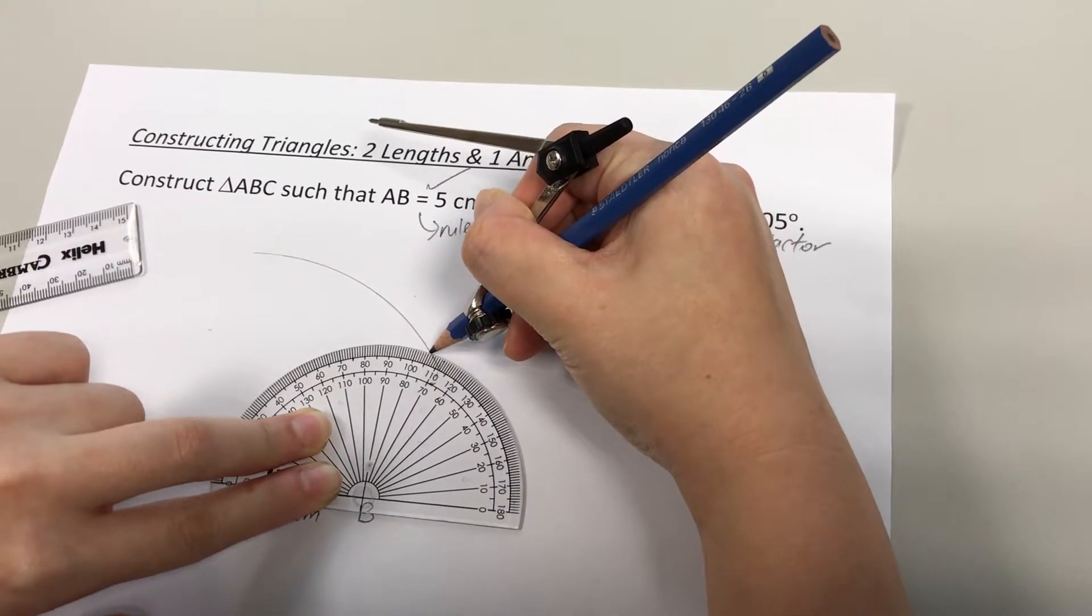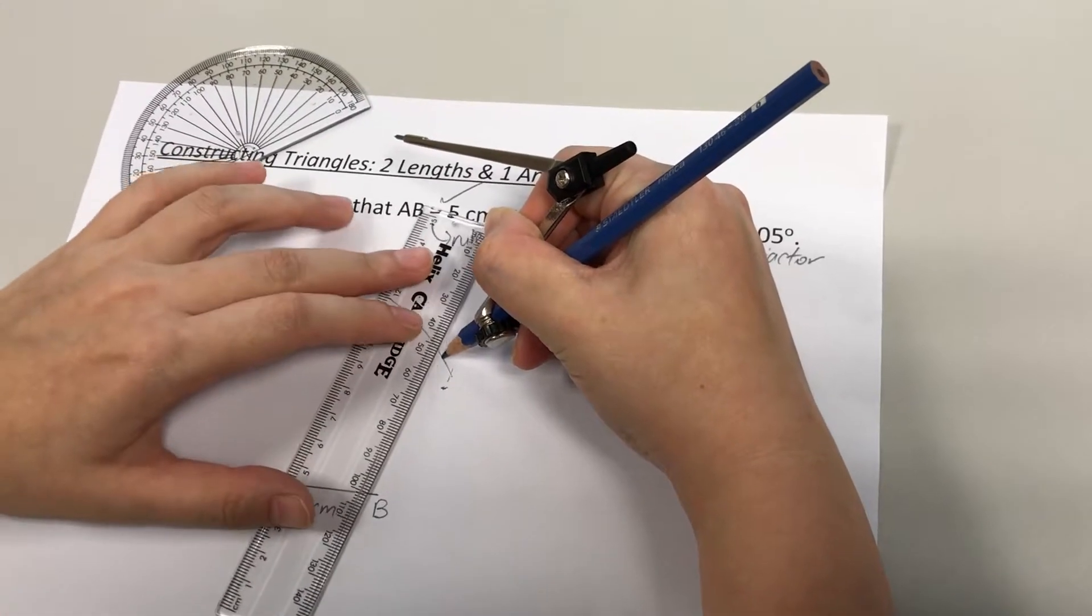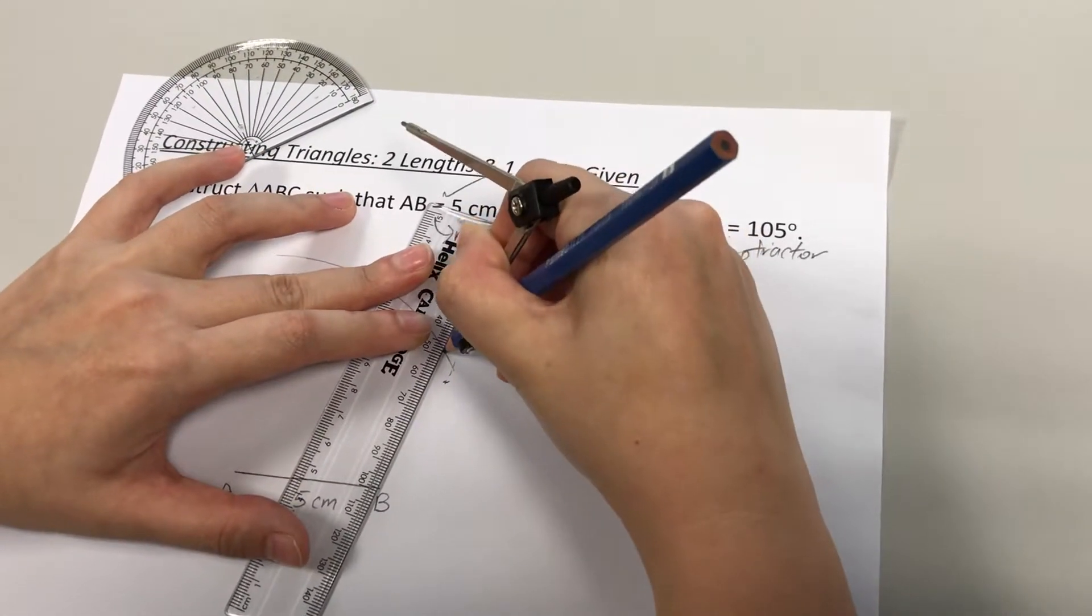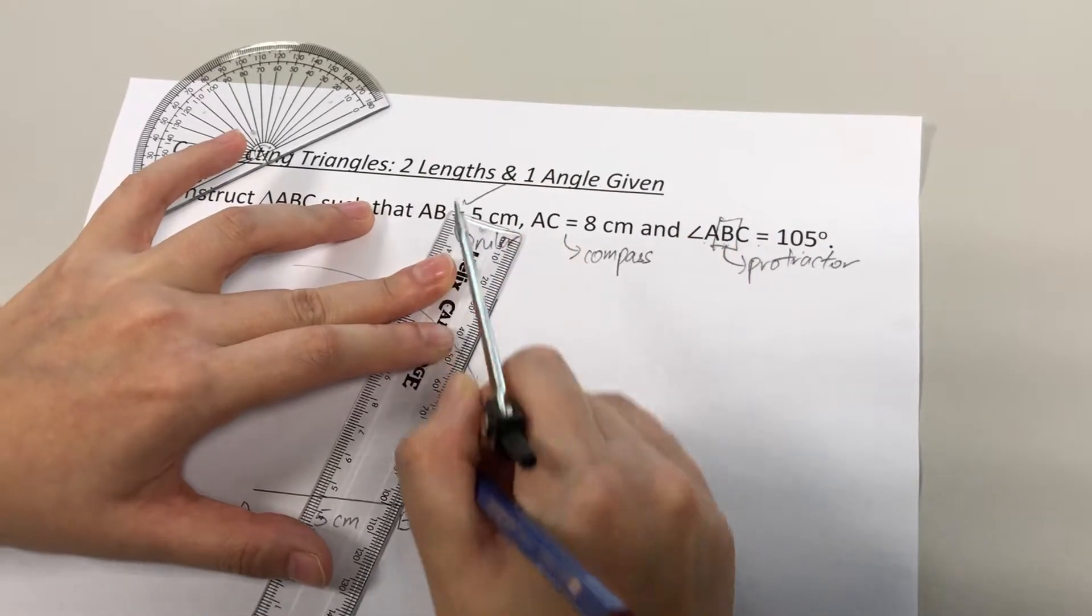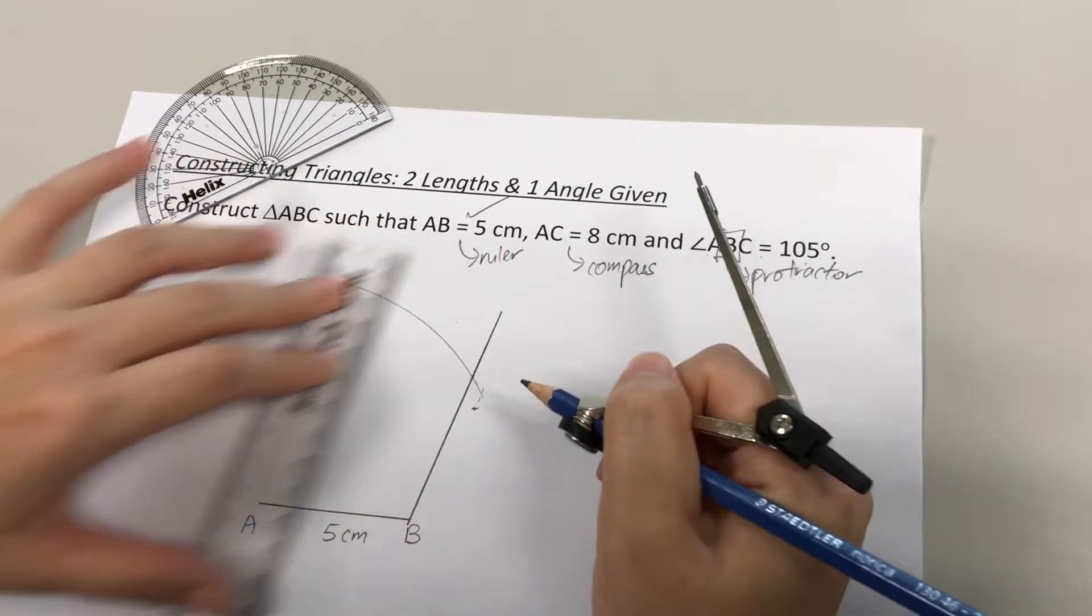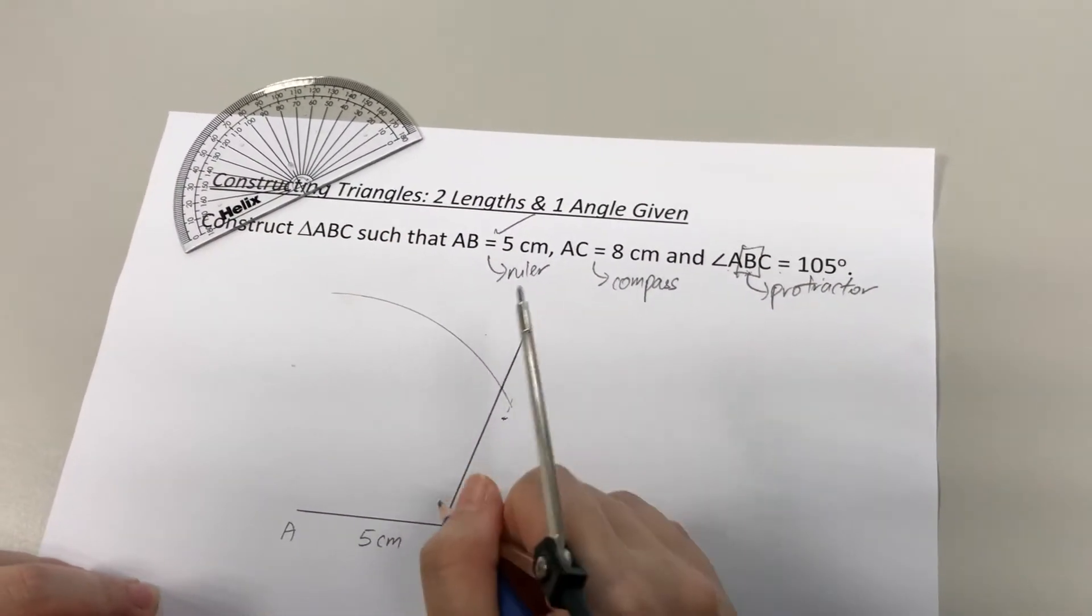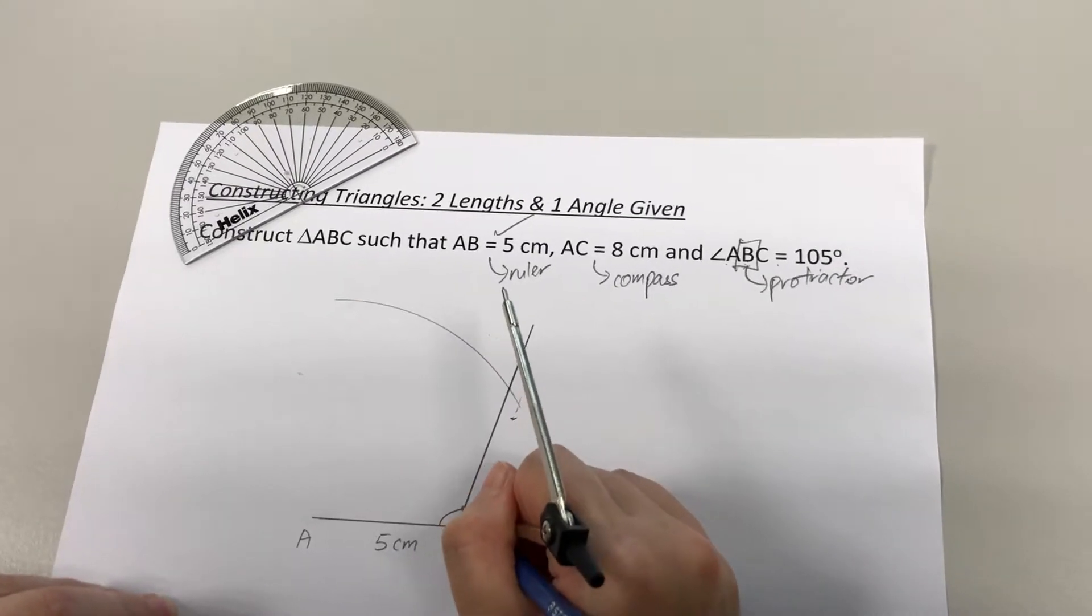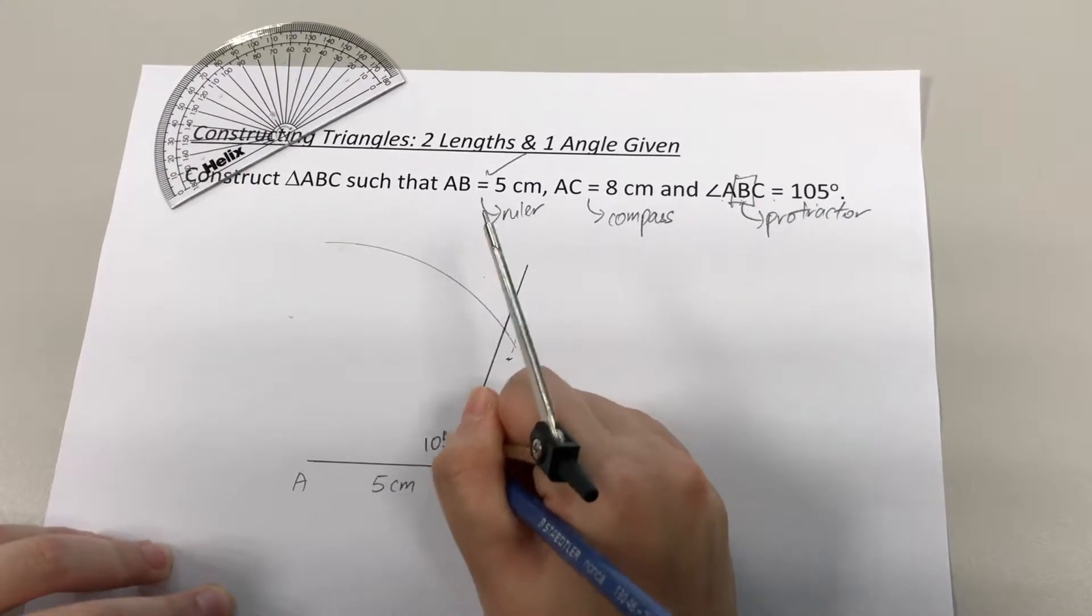105 is over here. I'm going to use my ruler to join that point to B. So here I will have my angle B, 105 degrees.